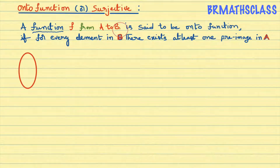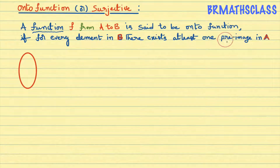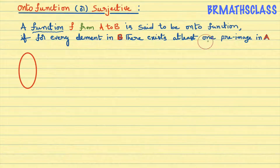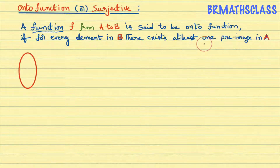For every element in set B — B is the codomain — there exists at least one preimage in set A. When we do example problems, you will know this more clearly. At least one preimage — minimum one preimage in set A. We will try to understand this definition more clearly with examples.